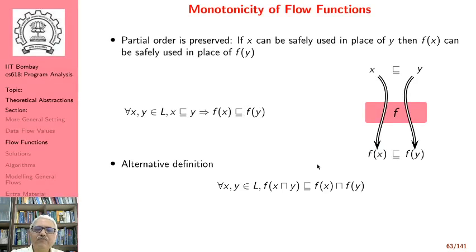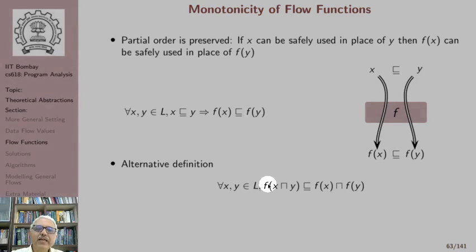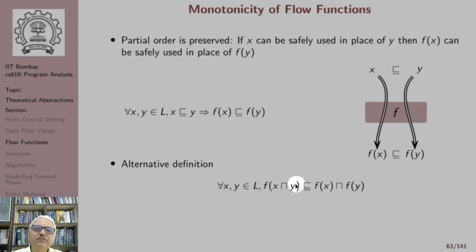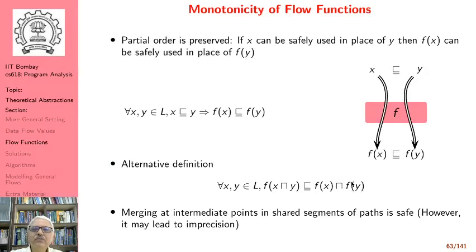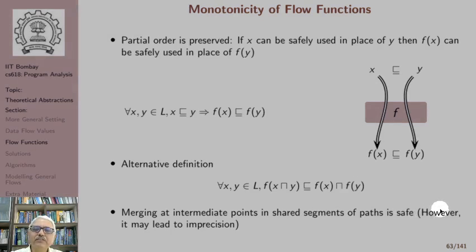There is an alternative definition of monotonicity which says that F of (X meet Y) is weaker than F(X) meet F(Y). Meaning, if we were to merge these dataflow values before applying the flow function, that merge will be represented by the GLB of X and Y, i.e., X meet Y. If we were to apply the flow function to the merge, we get a sound approximation compared to applying the flow functions independently and then taking the meet. So, merging at intermediate points in shared segments of paths is safe, however it may lead to imprecision.